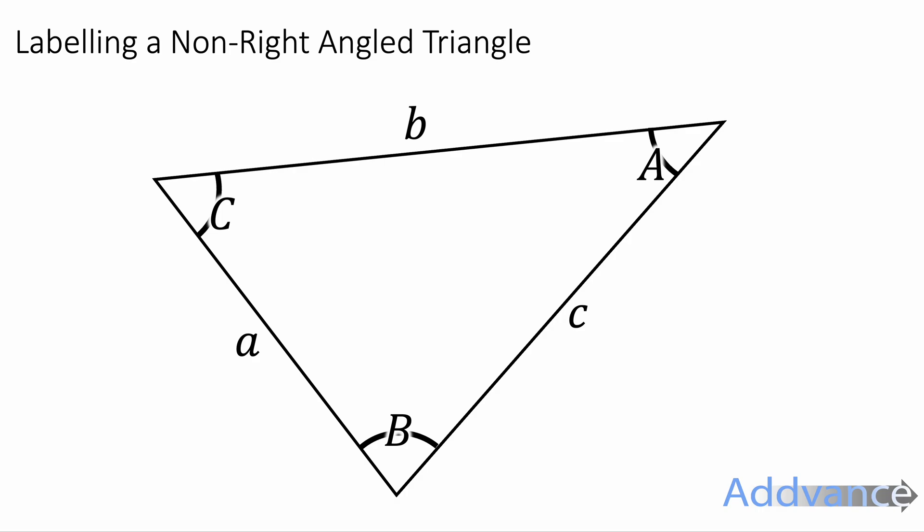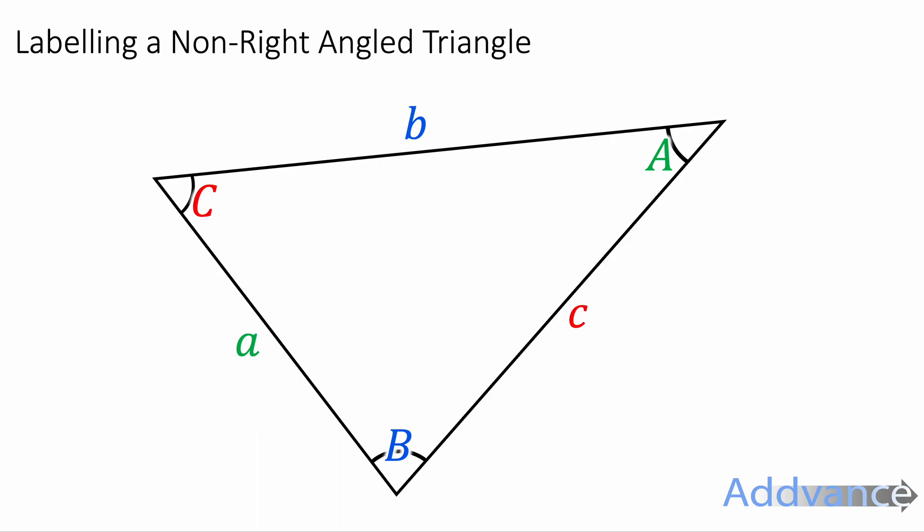Before we begin we need to know how to label a non-right-angled triangle. We label the opposite sides with matching letters. We call the sides small a and the opposite angle big A. Another side will be small b and the opposite angle will be big B. Another side will be small c and the opposite angle will be capital C.